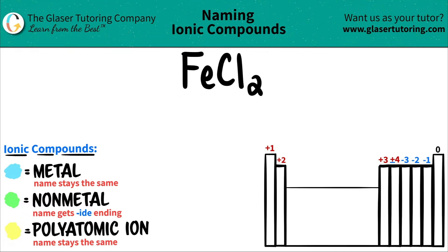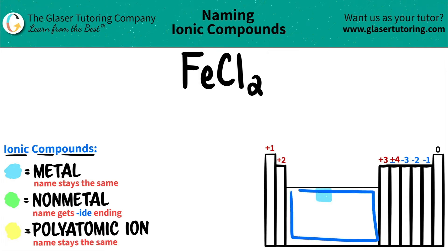Is it a metal or is it a non-metal? Well, Fe, which is iron, is somewhere over here on the periodic table. Since it's in the transition metal block — transition metal, literally metal — Fe, iron, is a metal.